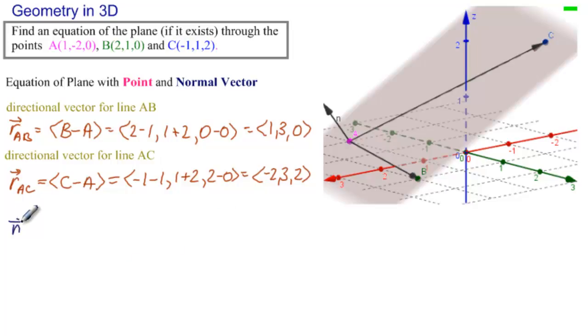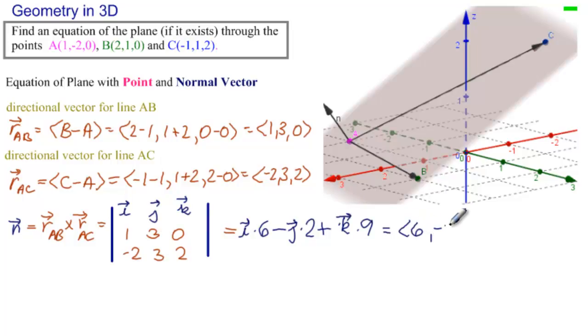Now, to get N, we take the vector product of these two. So R_AB vector product R_AC equals I, J, K, and we have 1, 3, 0, and minus 2, 3, 2. So we get I times 3 times 2 minus 0, so 6, minus J, and we have 2, 2 plus 0, so 2, and then K. And what do we have for K? 3 plus 6, so 9. So we have 6, minus 2, 9.